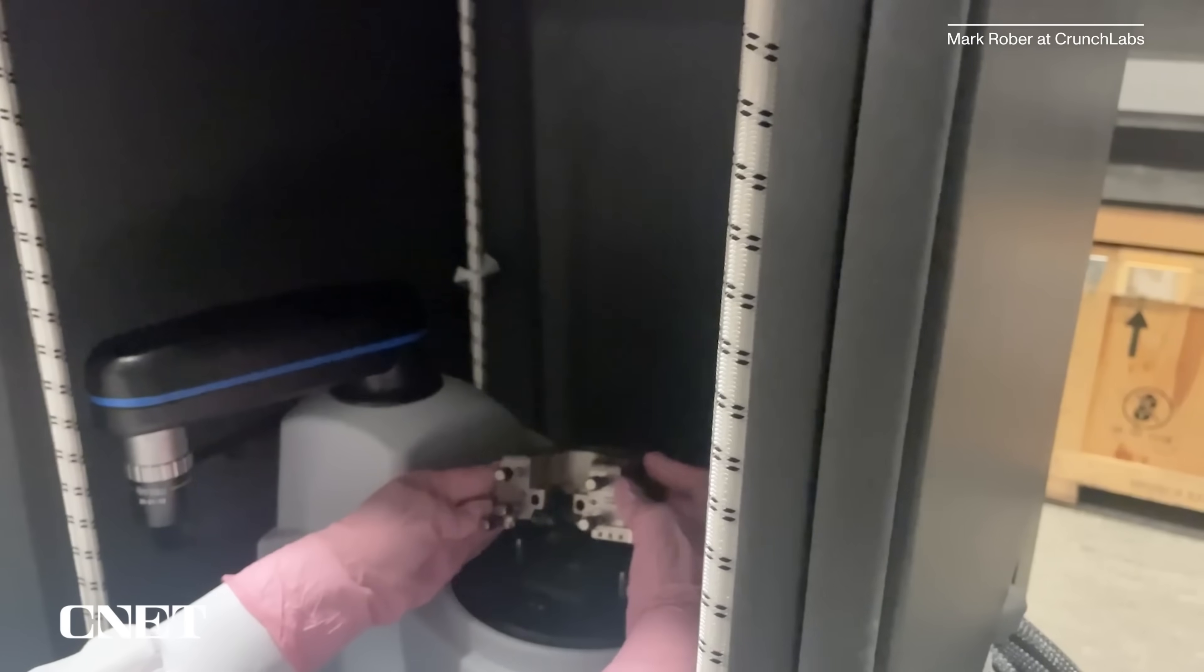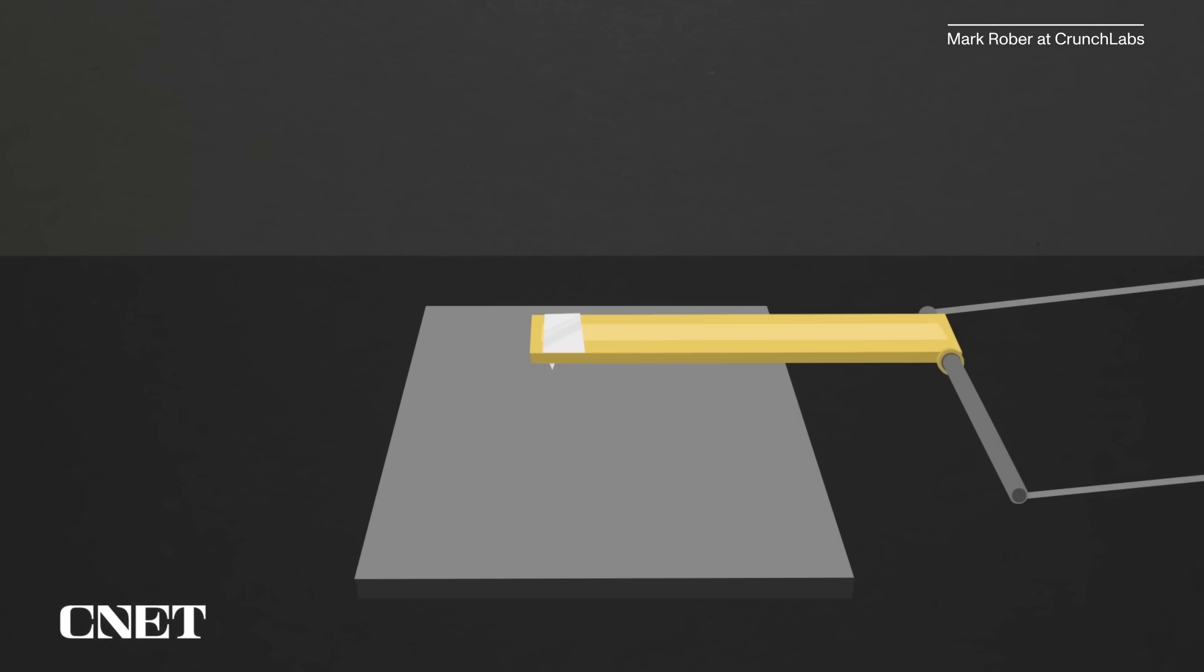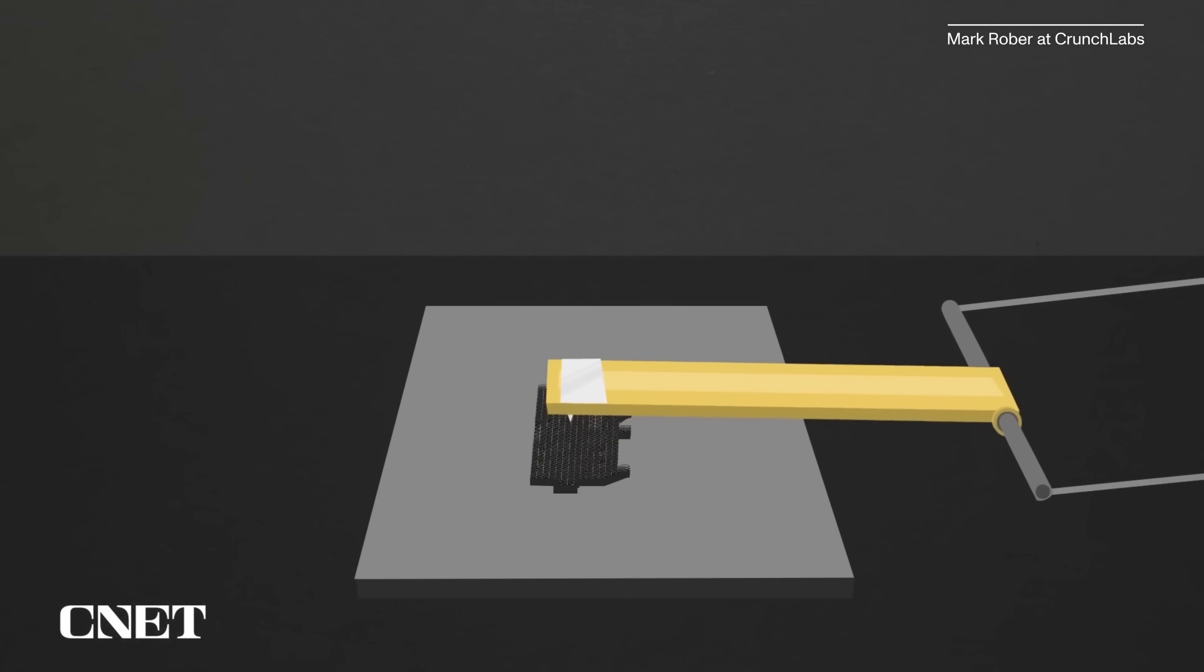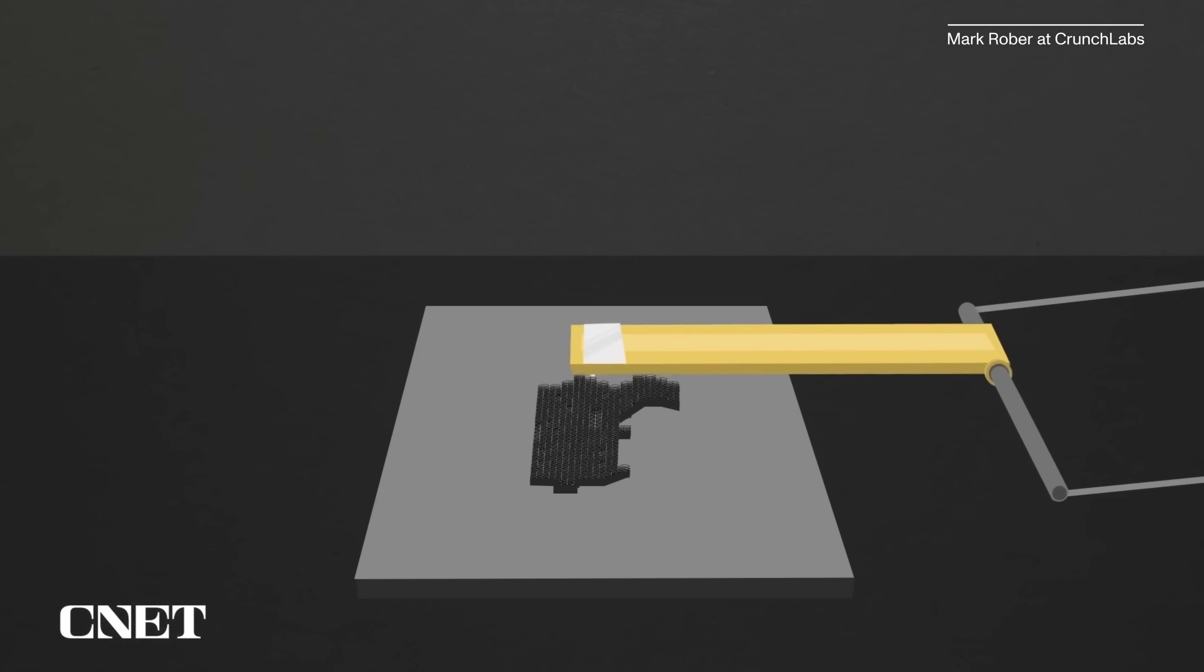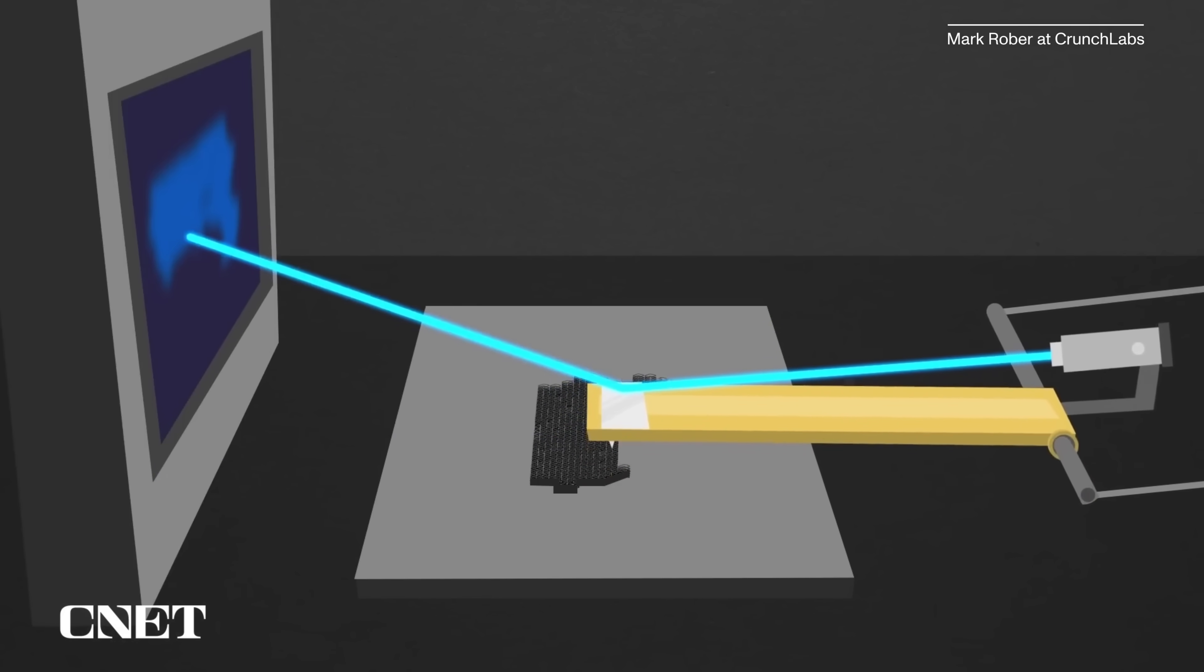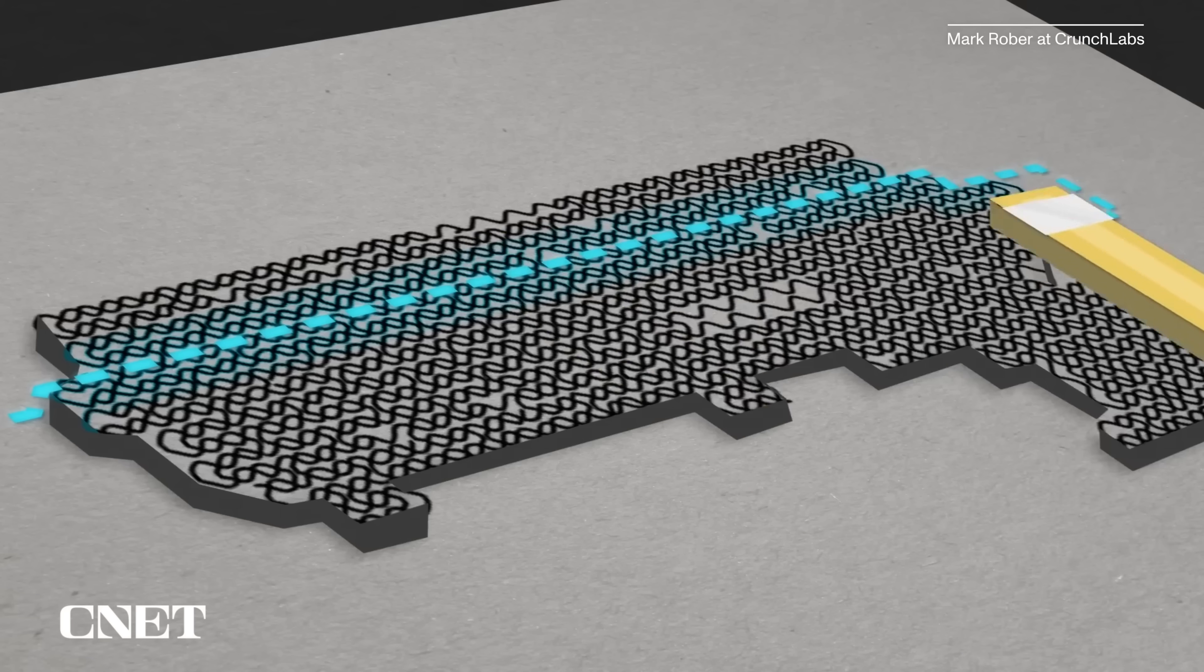We had to use an atomic force microscope, which is basically a lever arm that goes out and it just feels its way back and forth across the surface. And then when it encounters something as small as a single atom, it moves up a little bit. And then when it passes by that atom, it moves down. And then you're shining a laser off that lever so you can accentuate the movements up and down.